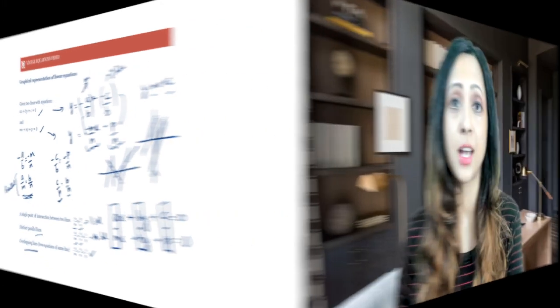So the two lines may not intersect at all (parallel), may be overlapping (two equations of the same line), or may intersect at one point. That's it for linear equations — we'll move on to quadratic equations now.